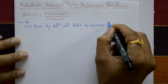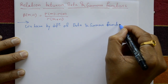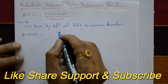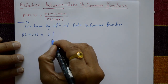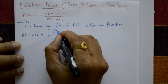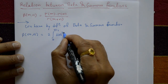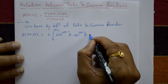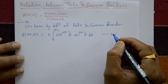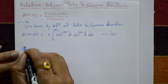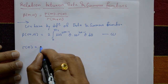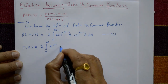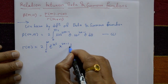By definition, Beta(m,n) is equal to 2 times the integration from 0 to π/2 of sin raised to (2m−1) θ times cos raised to (2n−1) θ dθ. Call this equation number 1. Gamma(n) is equal to 2 times the integration from 0 to infinity of e to the power minus x squared times x raised to (2n−1) dx. This is equation number 2.